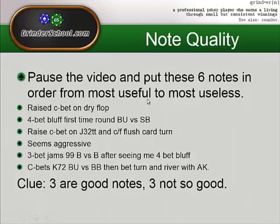'Seems aggressive' — just not a useful note. Why not just wait until you can note something more specific and tag him as an Agro Fish or Agro Reg for now? That goes towards the bottom of the pile. 'Three-bet jams 99 blind vs blind after seeing me four-bet bluff' — this is also a very good note. It's very specific and gives you an idea of how your opponent is likely to adjust, so you can readjust and win the war of exploitability. Any note that allows you to exploit your opponent very well is going to be a really good one — top note.